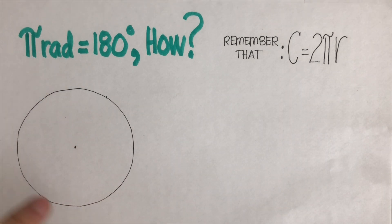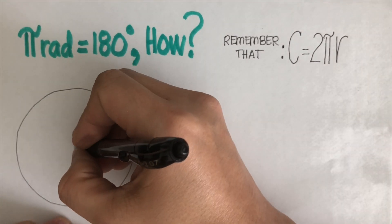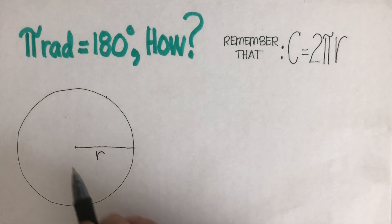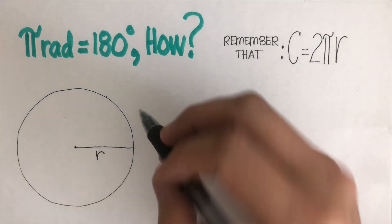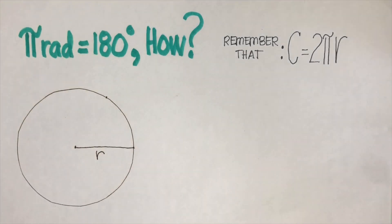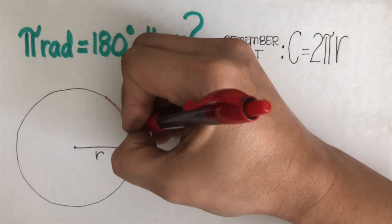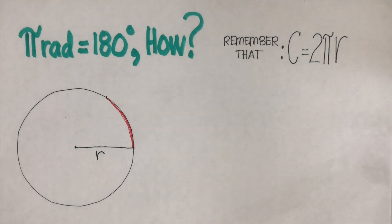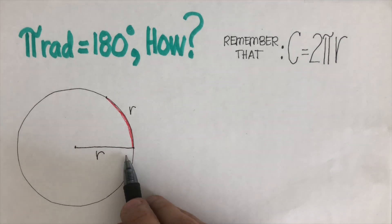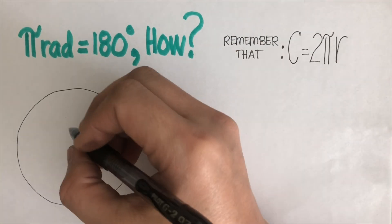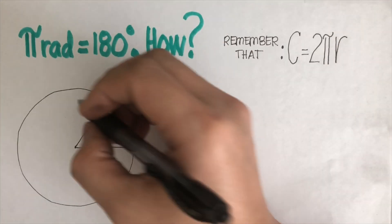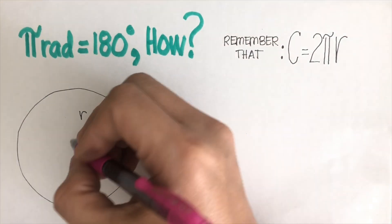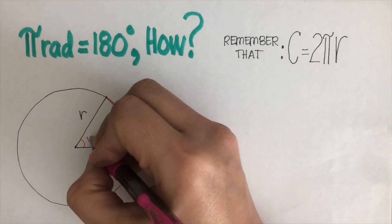First, we have a circle here. There's the center of the circle. I'm going to drop a line from the center to the side of the circle — I'll call this the radius and use the letter R. Now if R is 10 centimeters, I measure another 10 centimeters along the circle's edge, and drop another line segment from the center, also labeled R. The angle in the middle formed by these two radii is actually one radian.